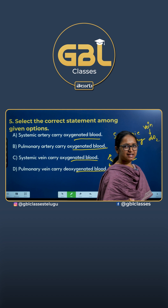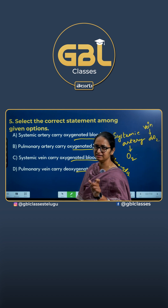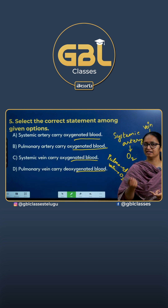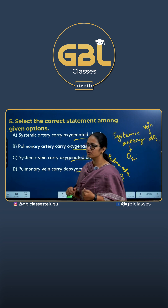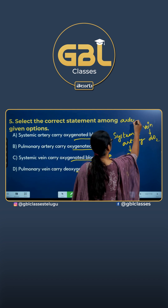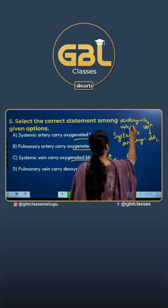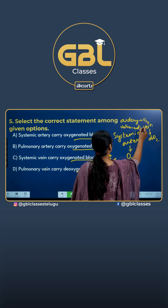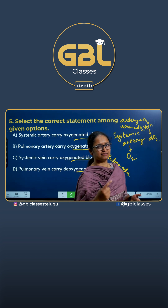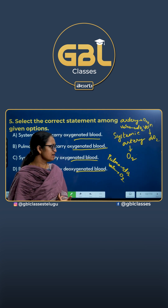Systemic artery carries oxygenated blood, whereas systemic veins carry deoxygenated blood. You have to remember that basically arteries carry oxygenated blood and veins carry deoxygenated blood. In contrast to that, pulmonary artery carries deoxygenated blood and pulmonary veins carry oxygenated blood.